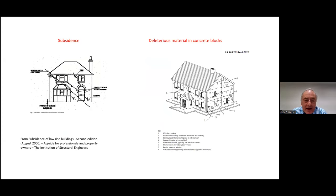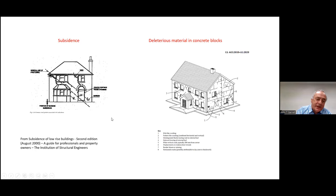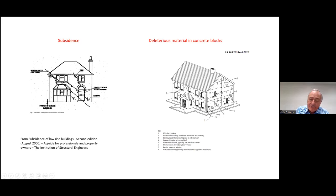When investigating damage to a building, it's very important to understand the difference between the type of cracking you get with a subsidence-related issue. I've taken a sketch on the left-hand side of this slide showing the pattern of cracking you can expect where subsidence is the issue — that is, where you've got a foundation failure going down on the left-hand side, giving a diagonal sort of emphasis in the cracking. That diagram was taken from 'Subsidence of Lower Rise Buildings, Second Edition' published by the Institution of Structural Engineers.